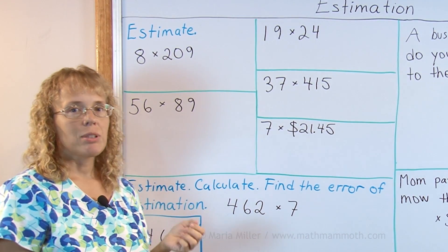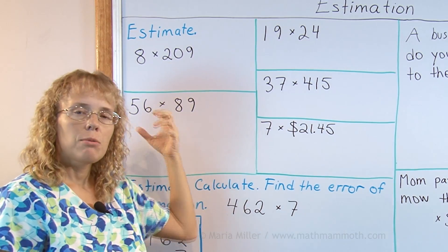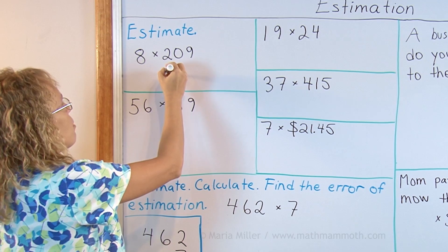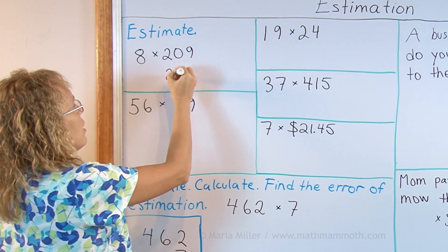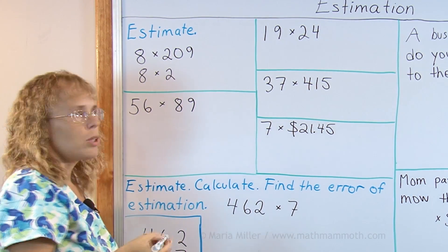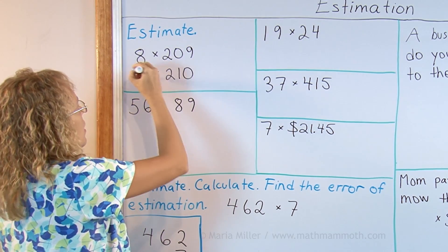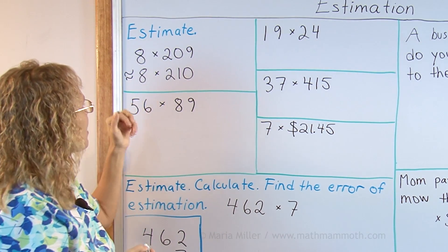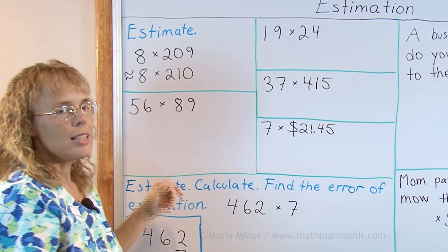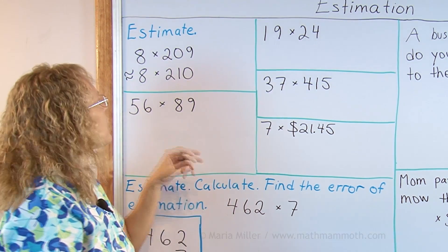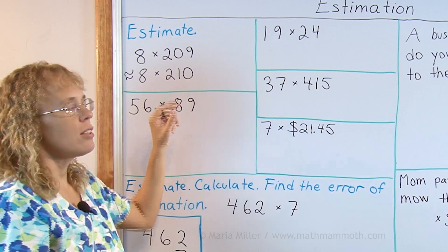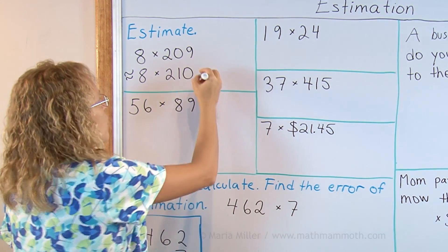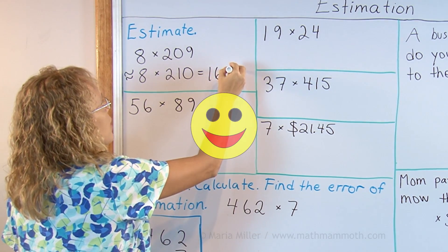Let's get to estimating 8 times 209. The basic idea is that we round whatever numbers are difficult so that we can multiply mentally. We would here round 209 to 210. These squiggly lines are the rounding symbol. It's about 8 times 210. This is still quite easy to multiply mentally because you just go 8 times 200 which is 1600 and then 8 times 10 which is 80. So we get 1680.